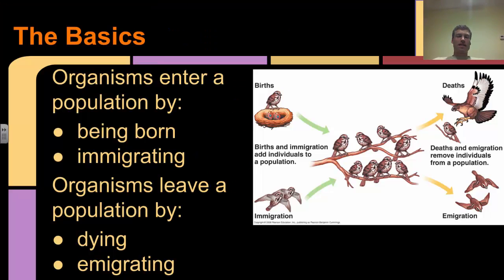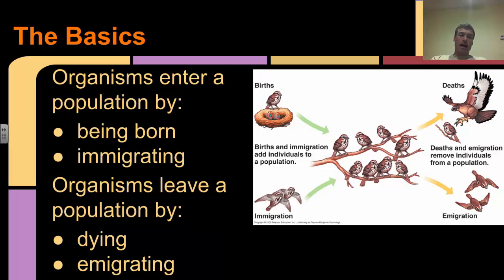So just the basic theories that go into this: organisms enter a population by either being born or by immigrating in, and then organisms leave a population by either dying or by emigrating. Think about immigrating - they're coming into a population - or emigrating - they are exiting a population.